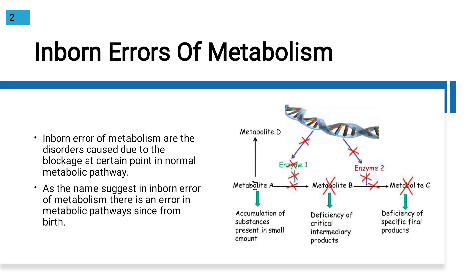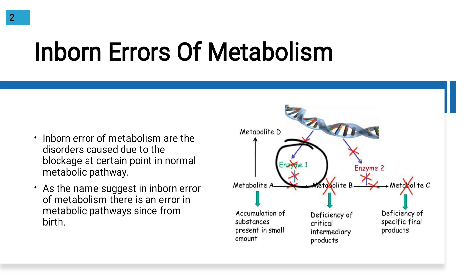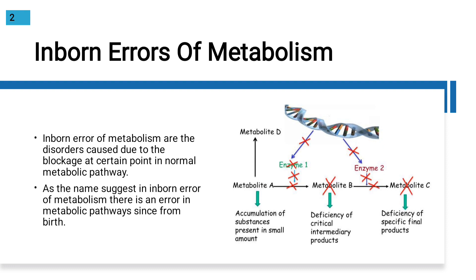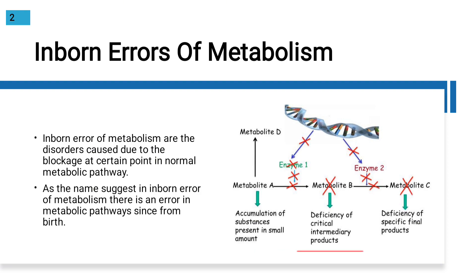For example, if metabolite A has to be converted into metabolite B, but there is a deficiency of the required enzyme, then metabolite A will accumulate in the body. If metabolite B is not produced, there will be a deficiency of critical intermediary products. Enzymes in our body such as glucose-6-phosphatase may be deficient, and those enzymes are needed for the conversion of one metabolite to another.